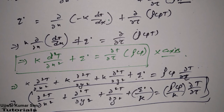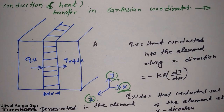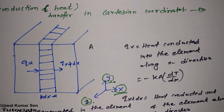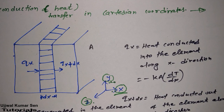Most of the time we are asked for all axes, and sometimes only for the X direction. This is how you can derive the equation for Cartesian coordinates in the case of conduction only. There are three types of coordinate systems: Cartesian, spherical, and cylindrical. In my next lectures, I will cover the other coordinate systems. Thanks for watching — see you soon. Bye-bye.